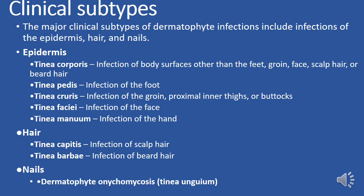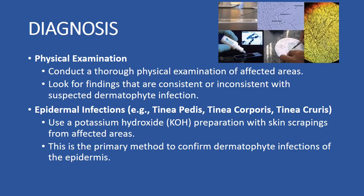Nails: Dermatophyte onychomycosis, also known as tinea unguium. Diagnosis: start with a detailed physical examination of the affected areas, looking for signs that match or don't match dermatophyte infections. For epidermal infections such as tinea pedis, tinea corporis, or tinea cruris, use a potassium hydroxide (KOH) test — scrape the skin and examine it to confirm the infection.